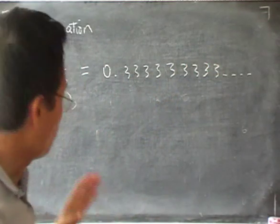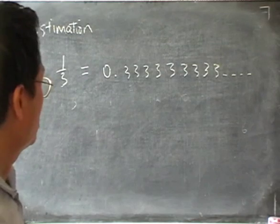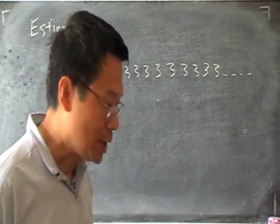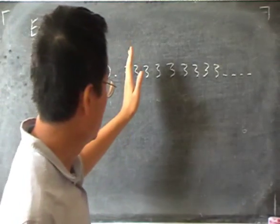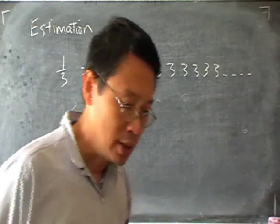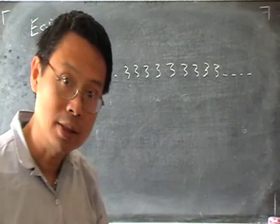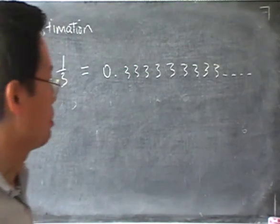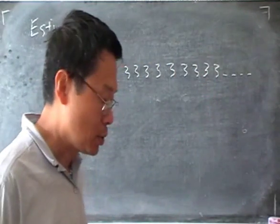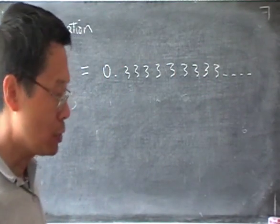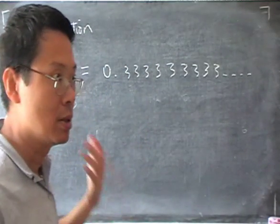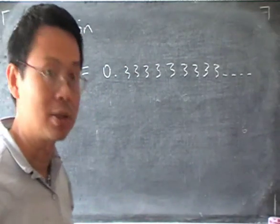So we can't actually write out all the decimal places. The way to deal with this is to chop off the number somewhere. If we keep more places — chop it off further away — the answer would be more accurate. But the problem is that we need more space to write. So usually we have to decide on a certain number of places to chop off when we can accept that it's accurate enough.